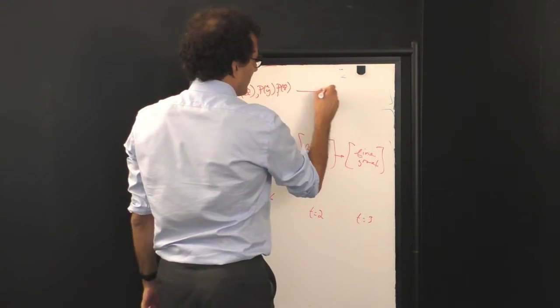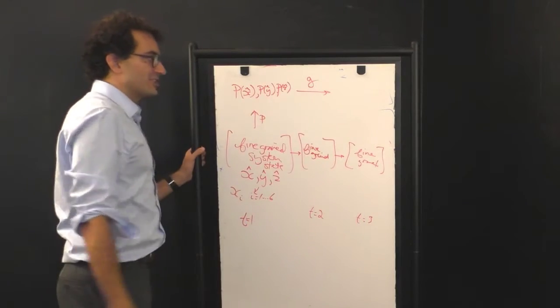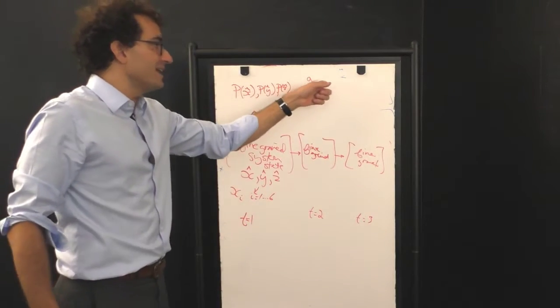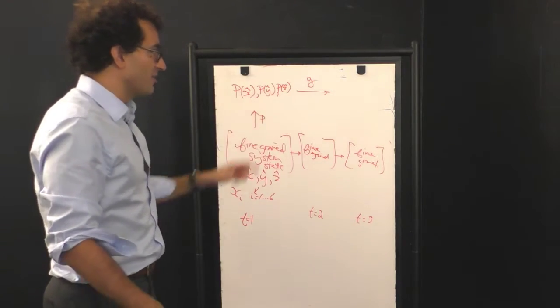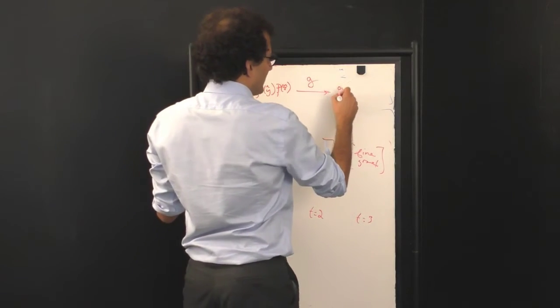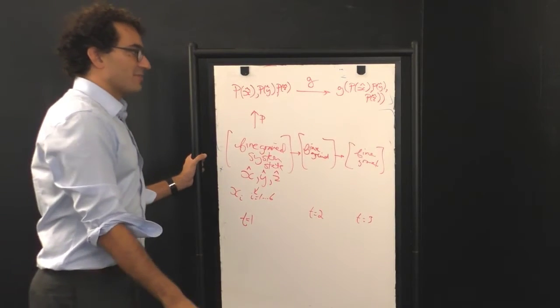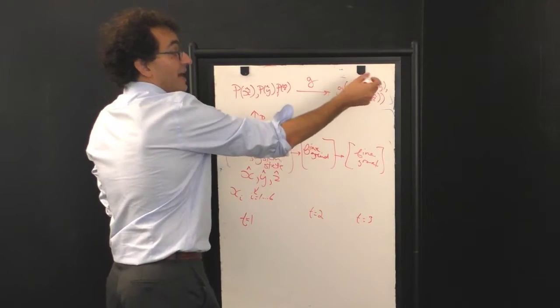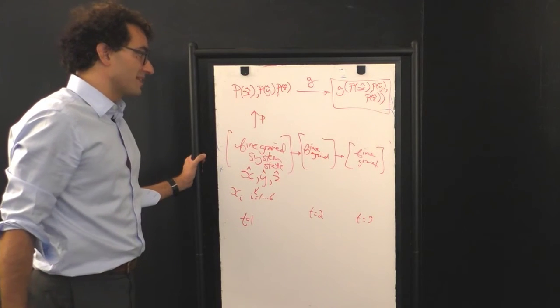And then I can evolve that coarse-grained system forward using some function g. Now, what g does is it takes in three binary variables and spits out a single binary variable. So, g is somewhere in the model class of cellular automata, and out the other side, I get a new set of variables. Or rather, I get the evolved state of the system at the coarse-grained level.